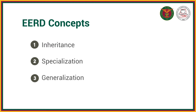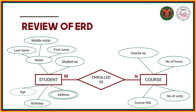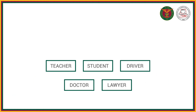Just to recall, this is what our ERD looks like. We have entity, attributes, relationship, cardinality, and participation. Sometimes, we may encounter problems where we can list entities that would share similar attributes.